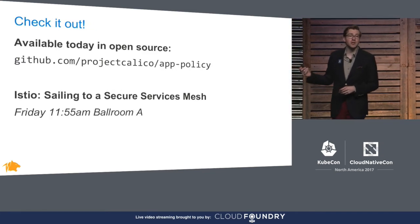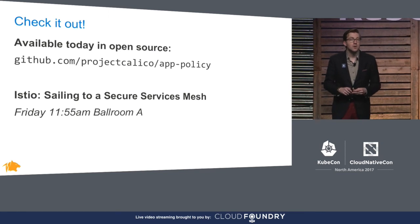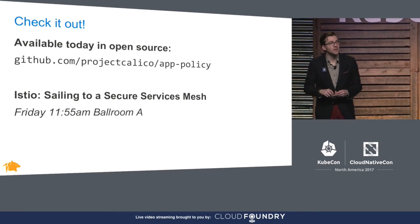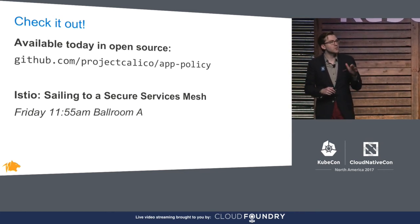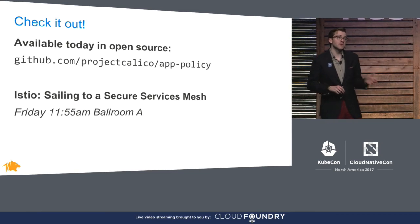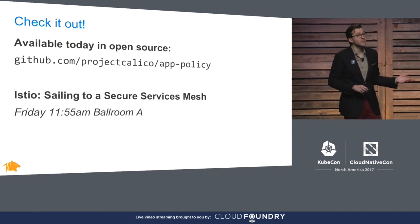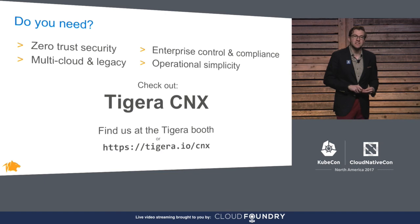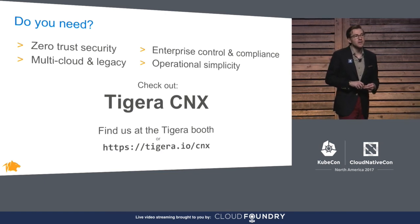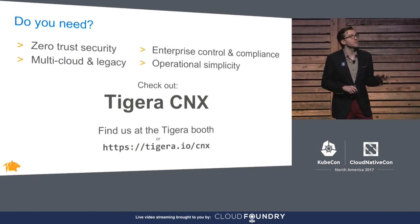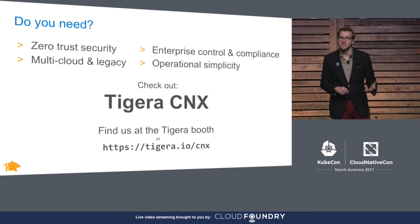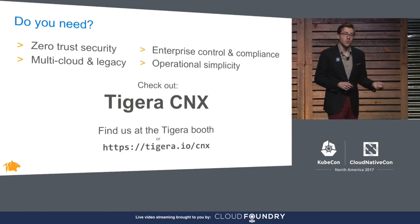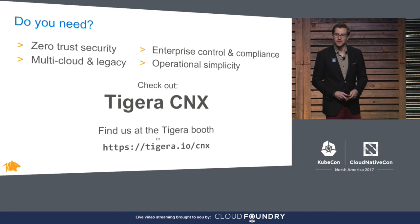These new features of Calico are available in tech preview. Check it out on GitHub — that'll show you how to set up a test cluster, kick the tires, and tell us what you think. I'm also giving a talk with Dan Berg of IBM where we'll be doing a deep dive on Istio security, including a demonstration of Calico application layer policy. That's tomorrow at 11:55, and I hope you'll join us. And one more thing: Tigera is announcing CNX, which is an enterprise offering for secure application connectivity built from Calico and Istio. It has enhanced controls and visibility tools specifically designed for enterprise processes and compliance requirements, and of course, enterprise-grade support. Check it out. Thank you.